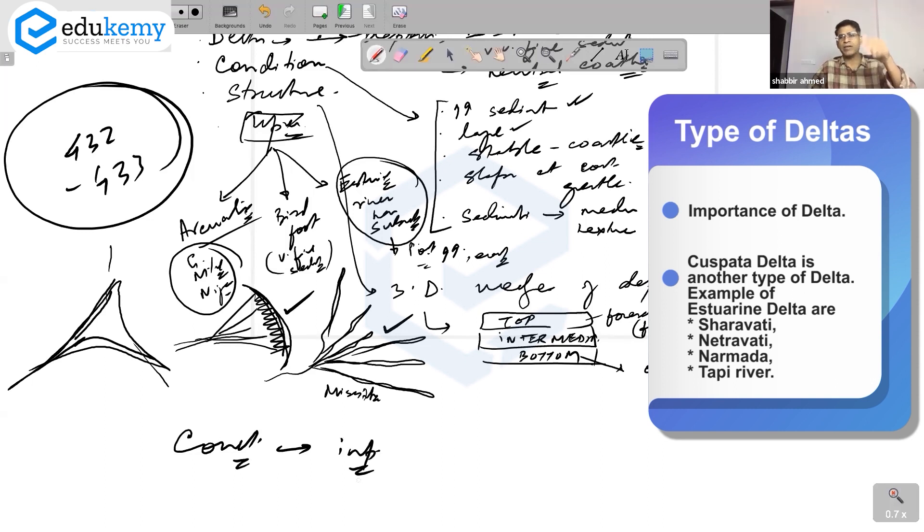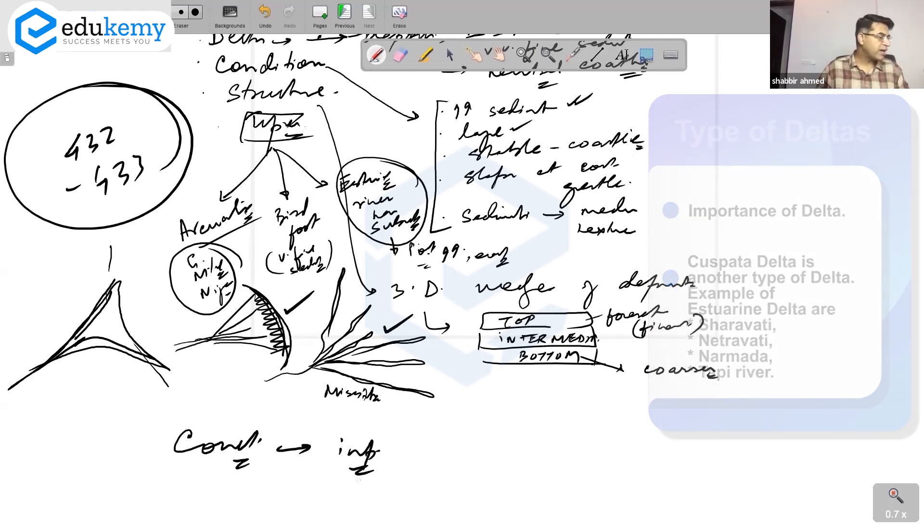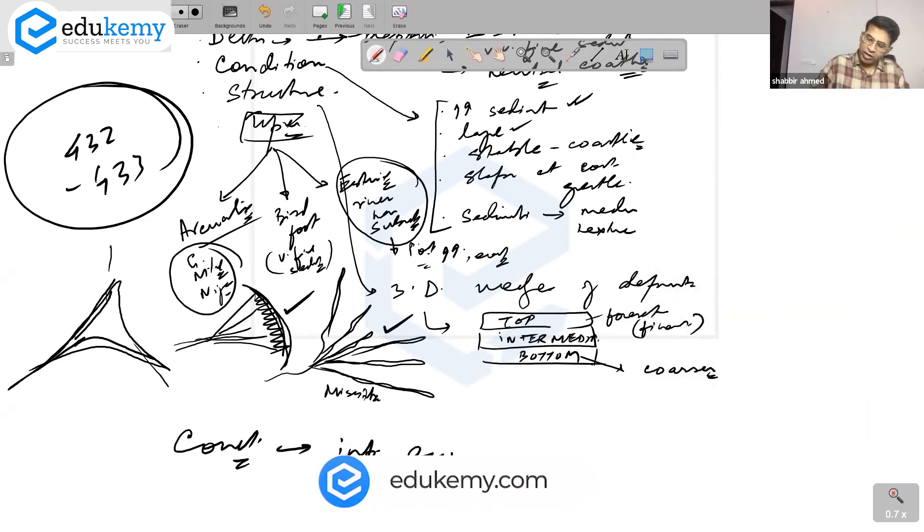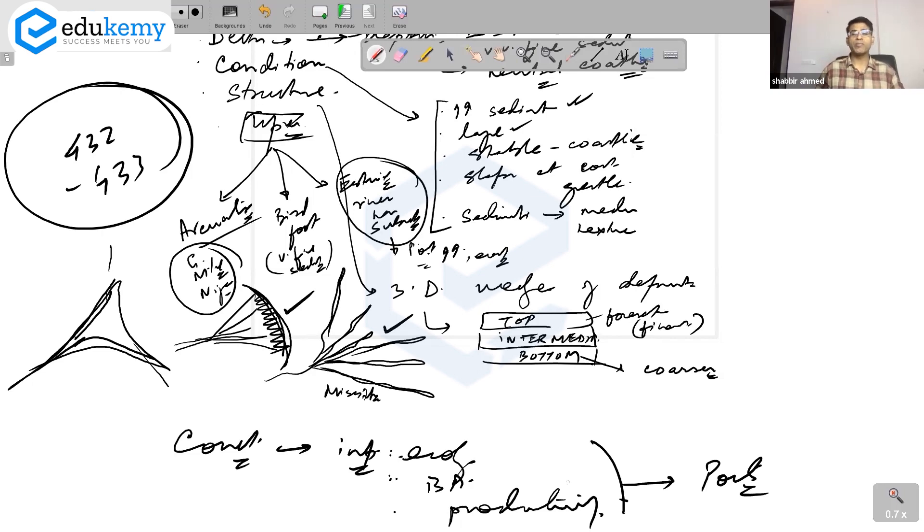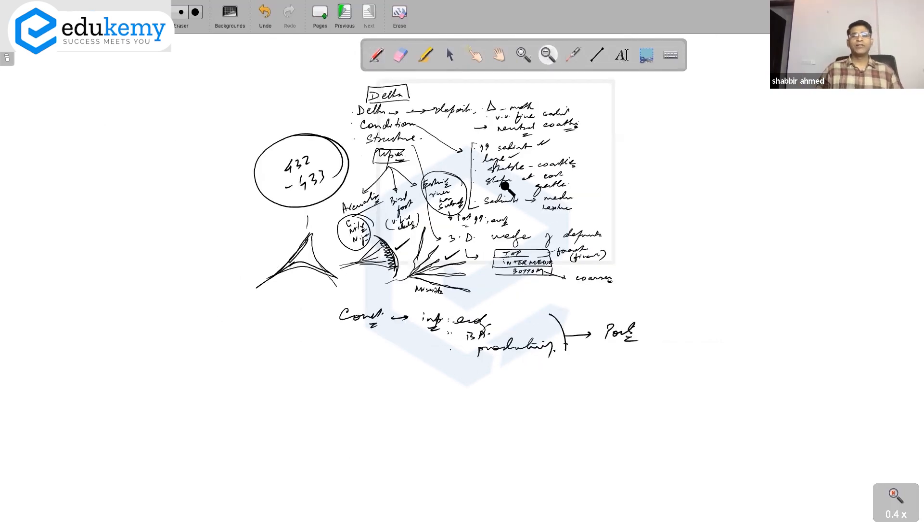Talk about importance of estuarine deltas, where the river has submerged. Most of the coastline along the western coast of India is estuarine - Saraswati River, Netravati River, Zuari River, Narmada, Tapi, all of them are estuarine. Keep the importance as ecological - they are important for biodiversity, areas of ocean productivity. You can talk about estuaries being important for ports.